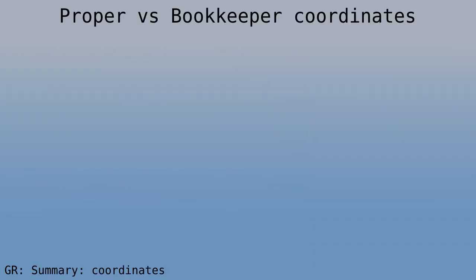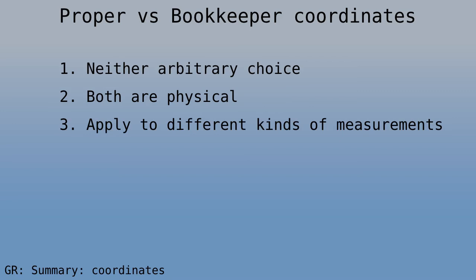Now, all this talk about proper values and bookkeeper values. What is it good for? What are some conclusions? Well, neither is just an artifact of a choice of coordinates. Both are physical, but they do show up in different kinds of measurements. The bookkeeper's speed of light also explains the bending of light.